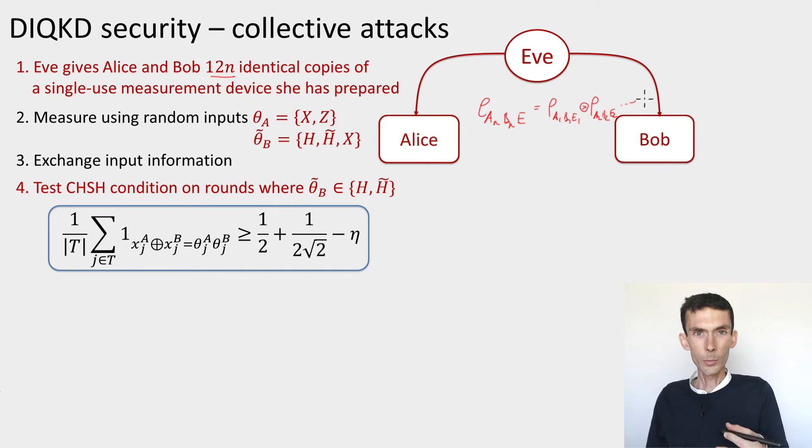Every time Alice and Bob use their device, you can think of it as the same device independently in each round. This will greatly facilitate the analysis. Other than that, the protocol is the same. This is just an assumption on the eavesdropper.